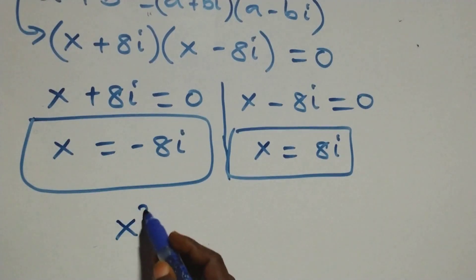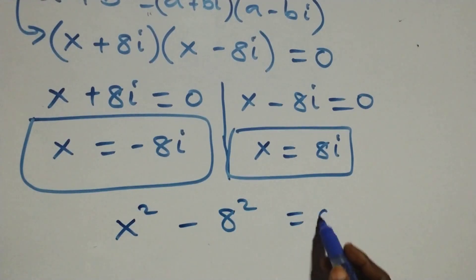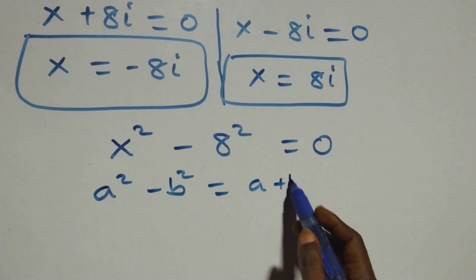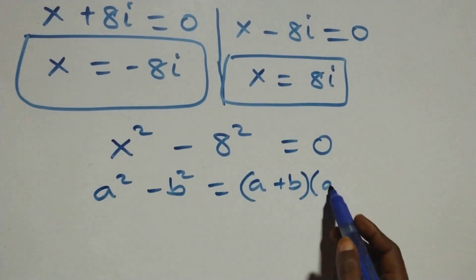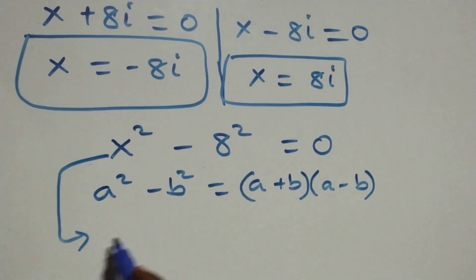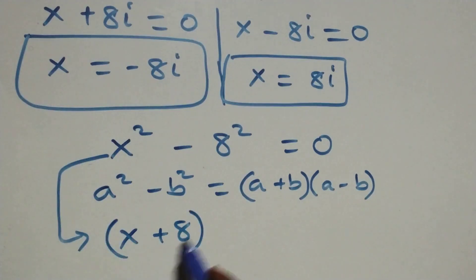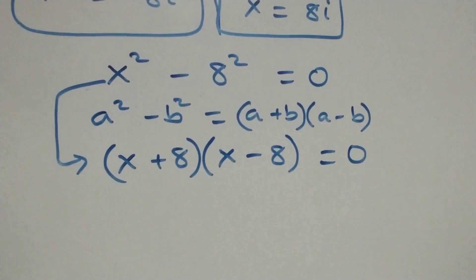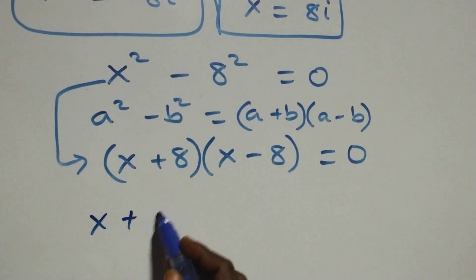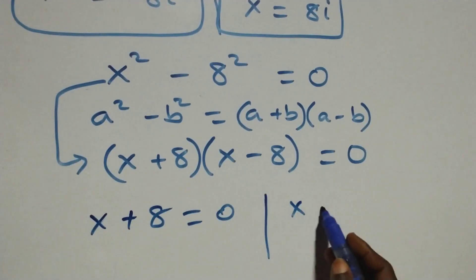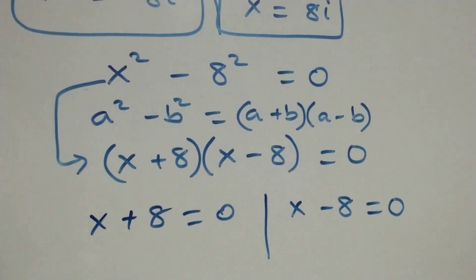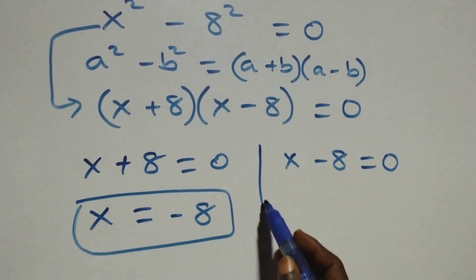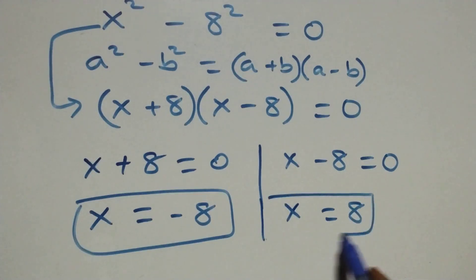Solving the second case, x squared minus 8 squared equals zero, we again apply the difference of squares: a squared minus b squared equals (a + b)(a − b). What we have becomes (x + 8)(x − 8) equals zero. This gives two possible cases: x + 8 equals zero, so x equals minus 8, which is a real solution; and x minus 8 equals zero, so x equals 8, which is also a real solution.